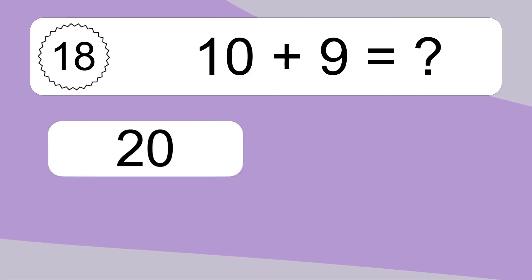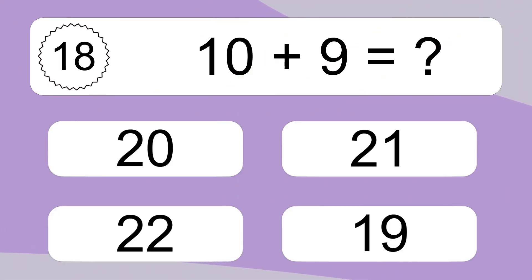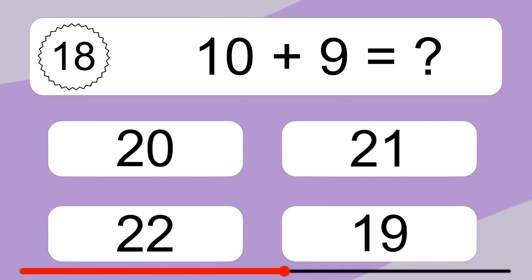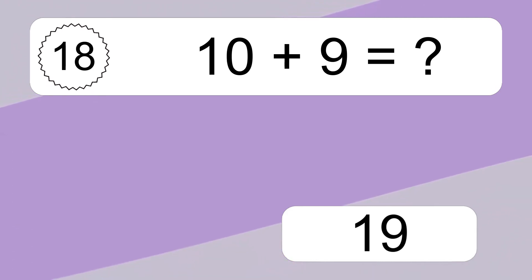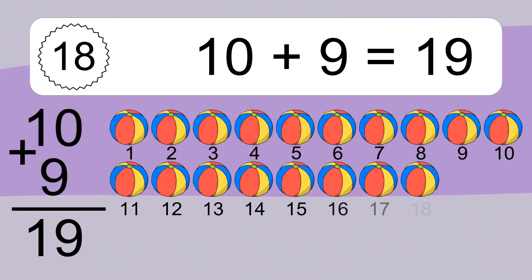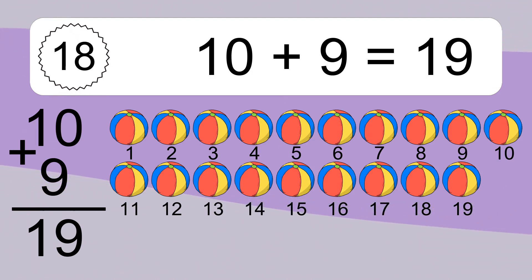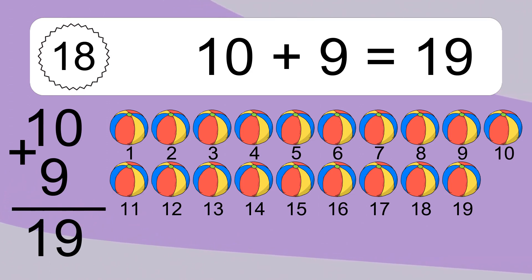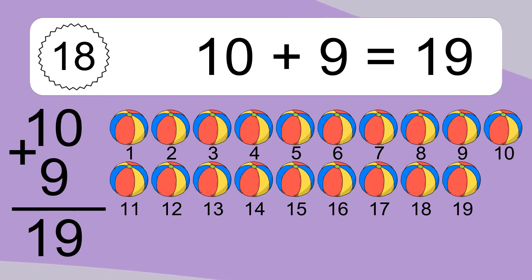10 plus 9 equals what? 10 plus 9 equals 19. Let's count it. 1, 2, 3, 4, 5, 6, 7, 8, 9, 10, 11, 12, 13, 14, 15, 16, 17, 18, 19.